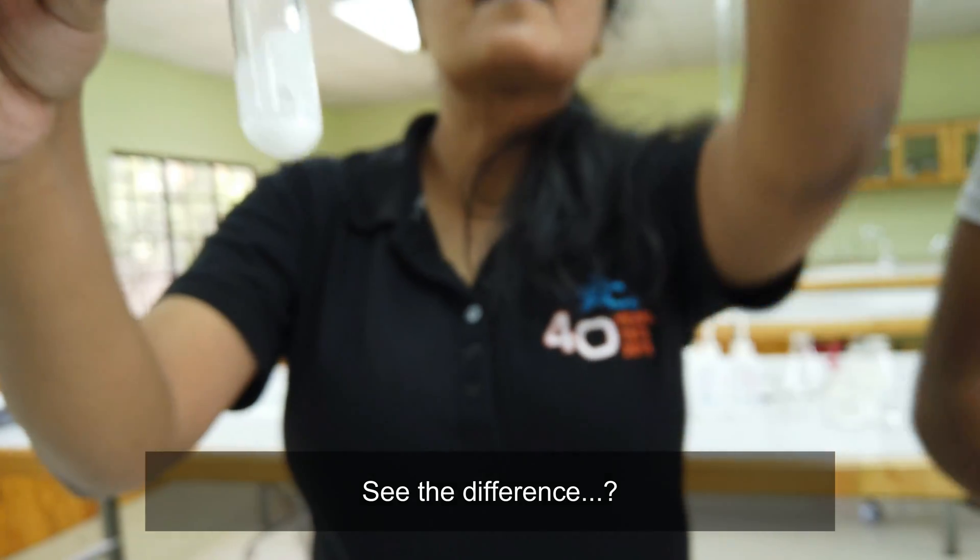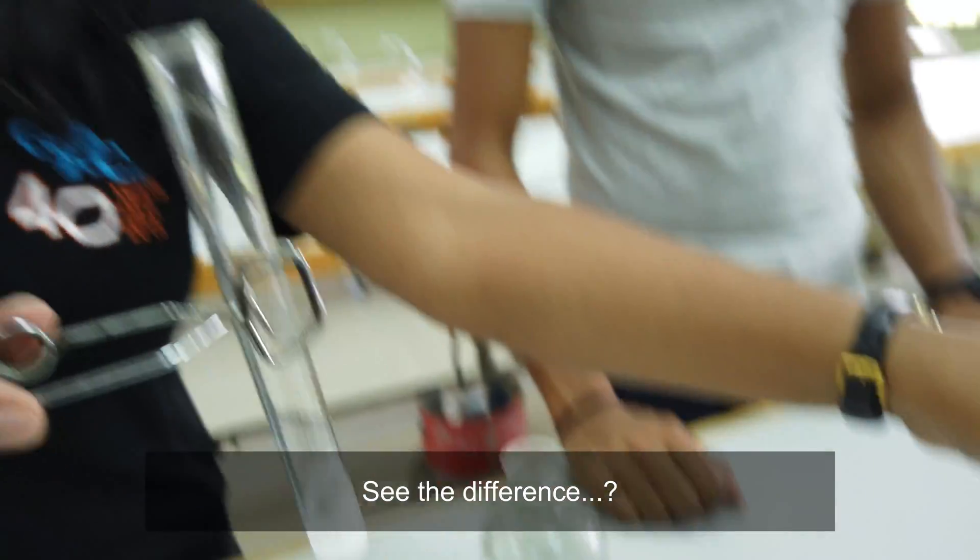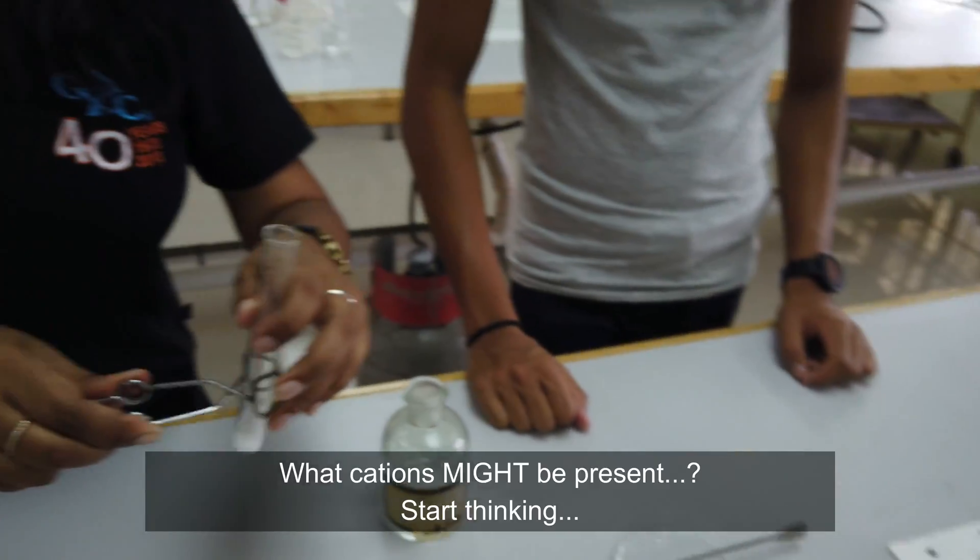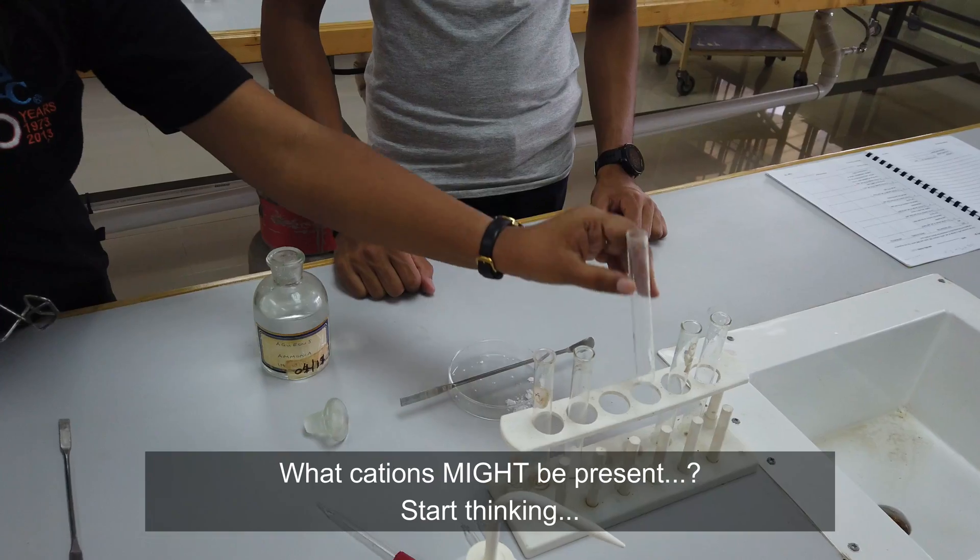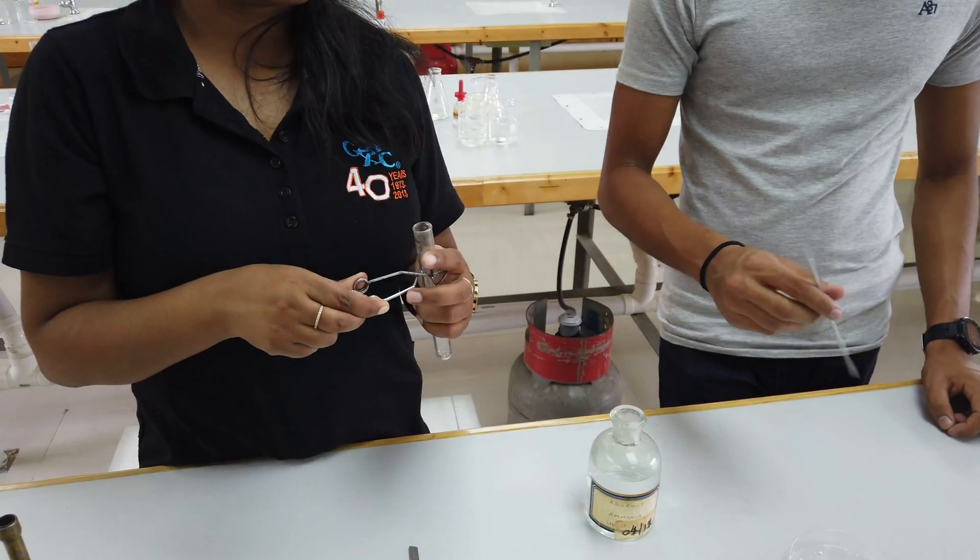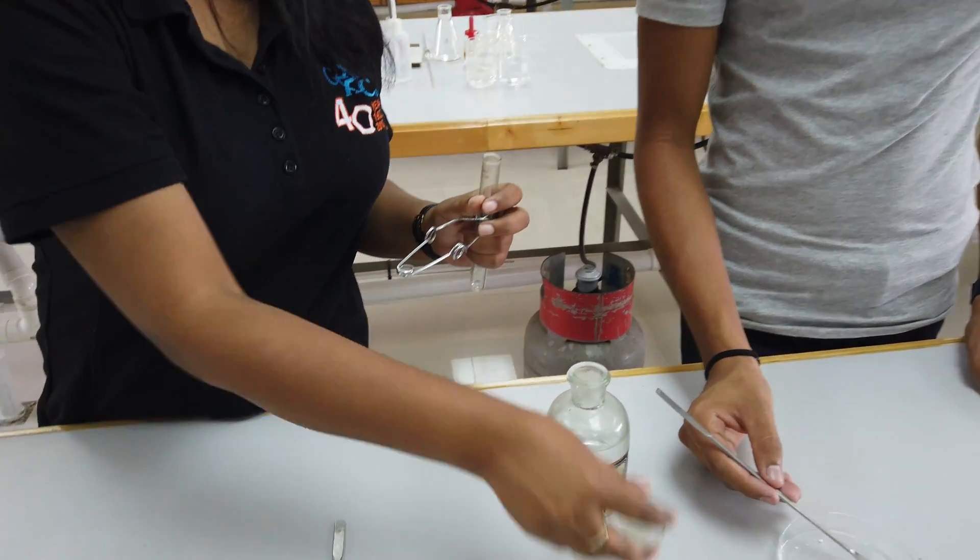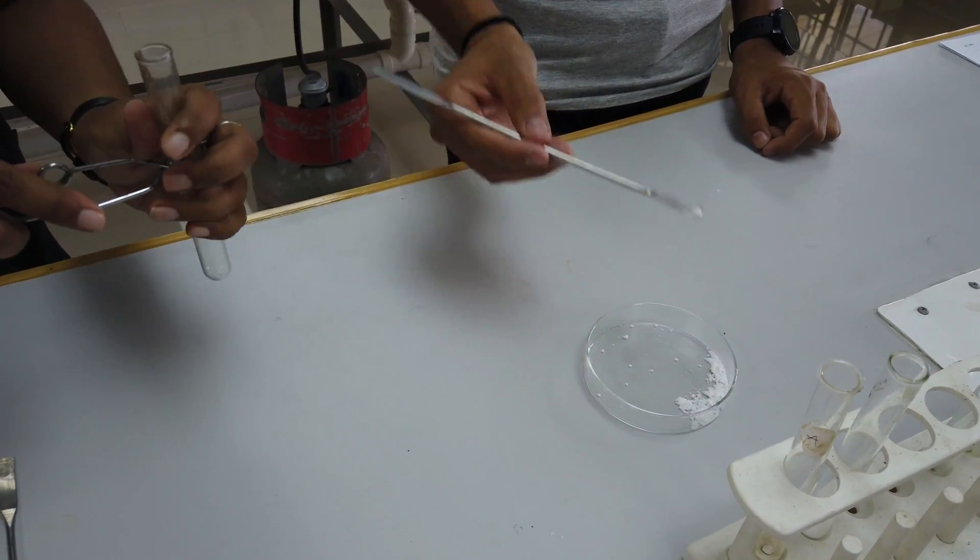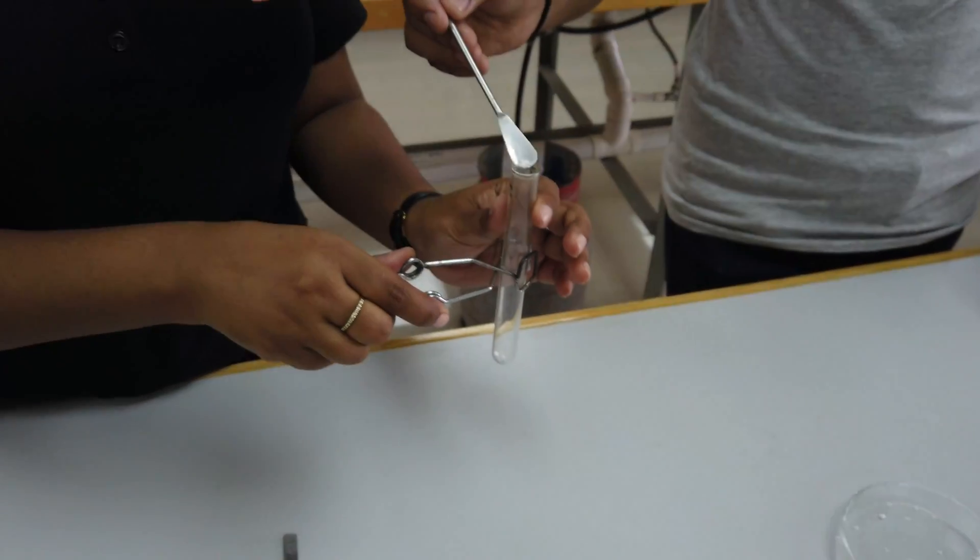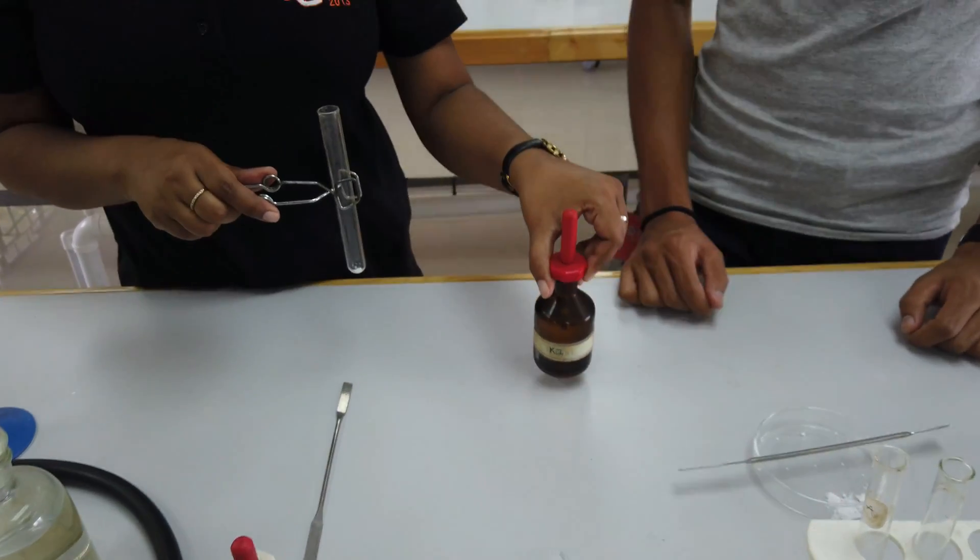This is why I'm saying it's a white precipitate soluble in excess as opposed to a white precipitate insoluble in excess. Now this doesn't help us to narrow down the cation yet, so we're gonna do one more confirmatory test. A little bit of salt once more.